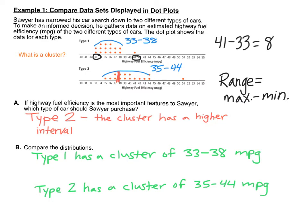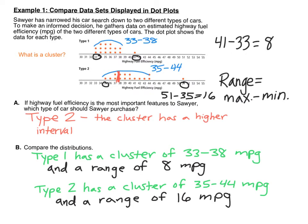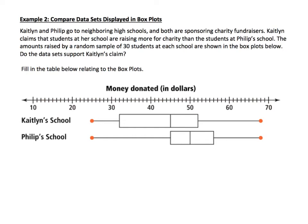Similarly, for type 2, the low is 35 and the high is 51. So the range is 51 minus 35, which equals 16. When describing the spread using a dot plot, it's easiest to compare the range. Type 1 has a smaller range of just 8 miles per gallon, whereas type 2 has a higher range of 16.